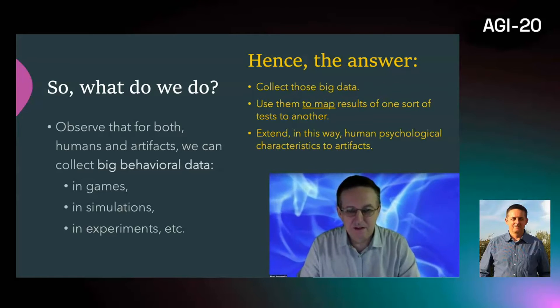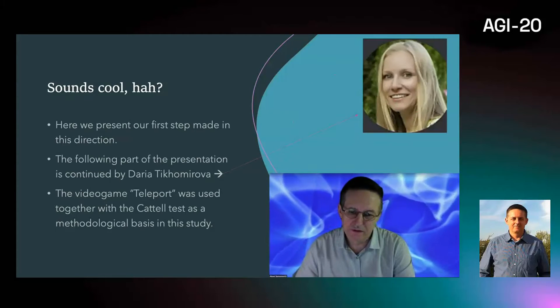Therefore, here's the idea of the answer: we collect those big data, we do the tests for humans and for artifacts, we map results of human tests to artifacts using correlations of test results with the big data. As a first step in this direction, we were able to define a set of psychological measures for bots and artifacts in a simple video game called Teleport.